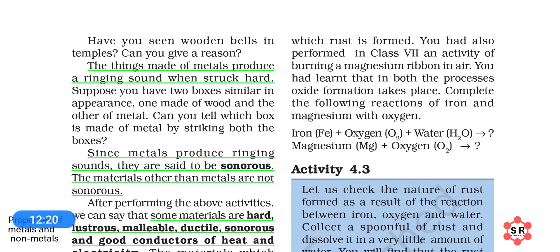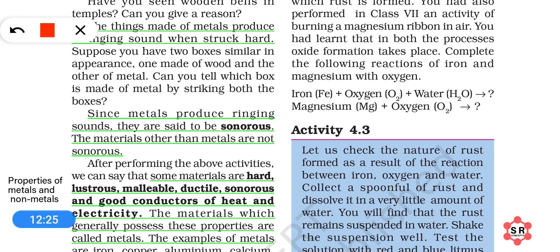Let us understand one more difference: metals are sonorous. When you drop a metal plate or coin in your kitchen, or hit a metal box with a stick, a ringing sound is produced. You also know that the school bell — a metal plate hit with a hammer — produces a ringing sound. When metals are hit, they produce a ringing sound. This property of metals is called sonorous.